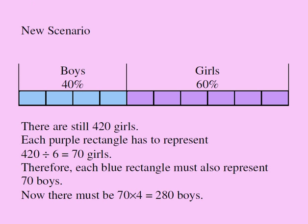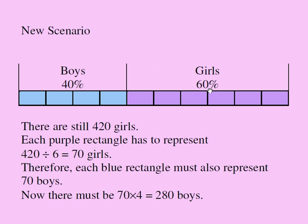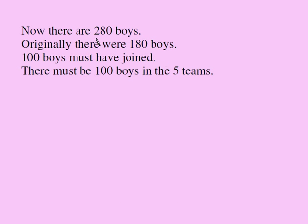Altogether now I have 280 boys. I don't need the total current number of girls because I know it's still 420. Originally I had 180 boys and now I have 280 boys — so 100 boys joined the team. There were 100 boys in those 5 teams. That's our answer: 100 boys.